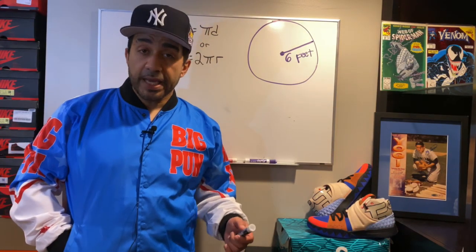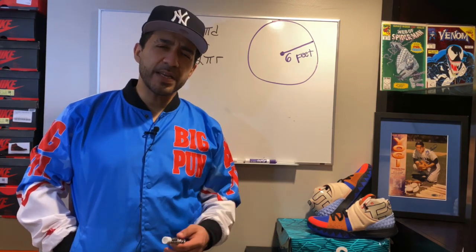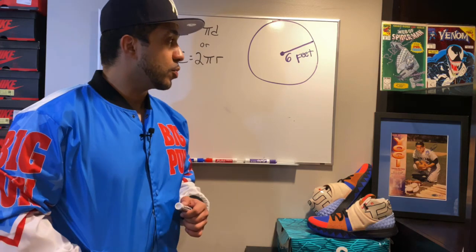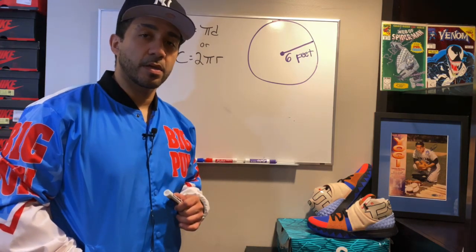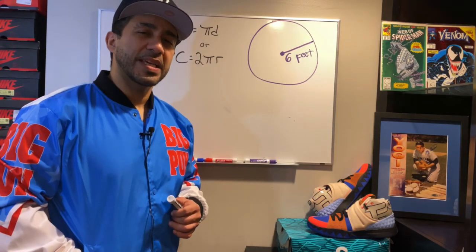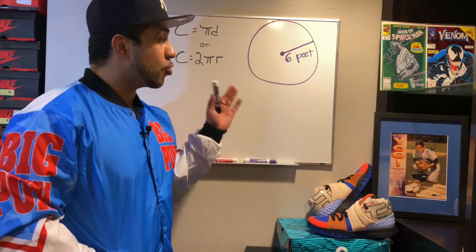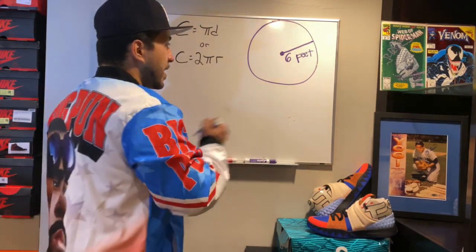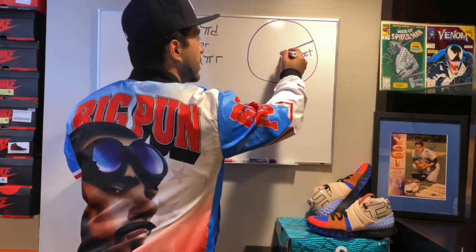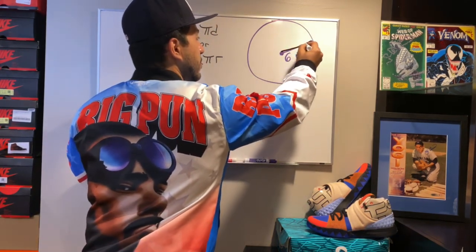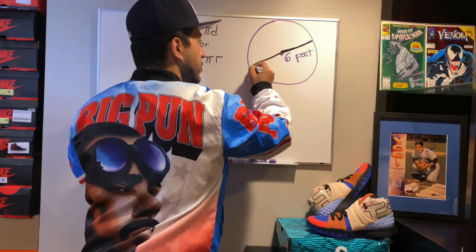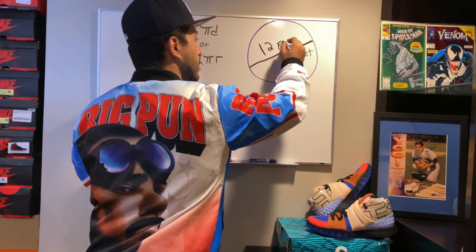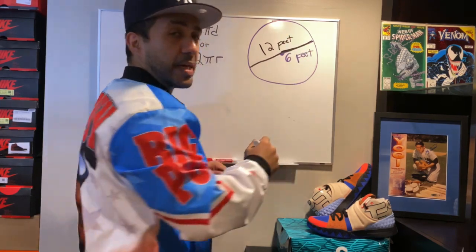Welcome back everyone. Today we'll be talking about identifying the circumference of a circle. Here we have a circle with a given radius of six feet. My first piece of advice is to take a moment to draw and label the diameter. The radius is six feet, which means the diameter, the full line cutting across the middle of the circle, would be 12 feet.